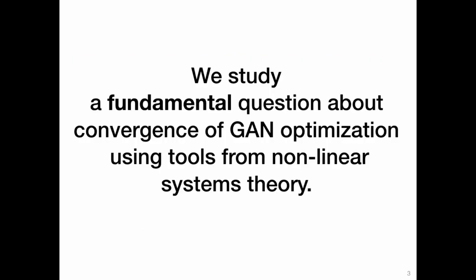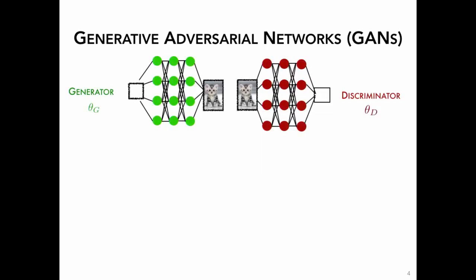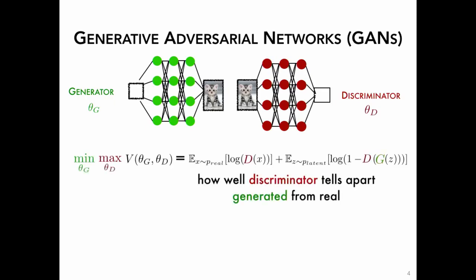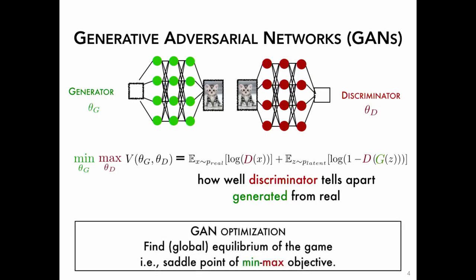In this work we bridge this gap by studying when and why GAN optimization converges to a good solution, using tools from nonlinear systems theory. GANs consist of two parameterized models: a generator and a discriminator. The generator generates random images from its parameterized distribution, and the discriminator classifies these generated images from real-world images. The GAN is cast as a game using a min-max objective V. We want the discriminator to maximize this objective and the generator to minimize it. The goal is to find an equilibrium point, or a saddle point of the min-max objective.